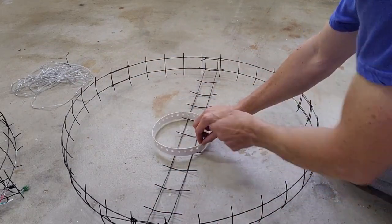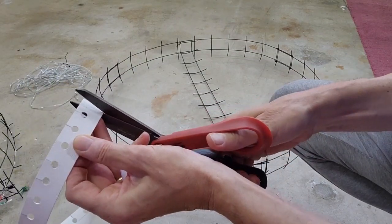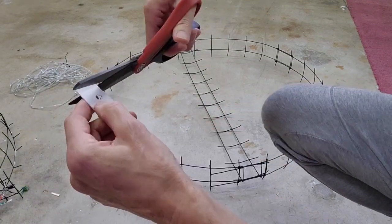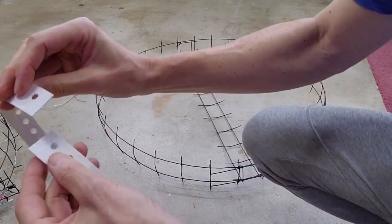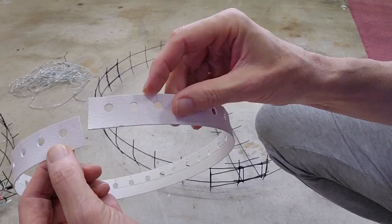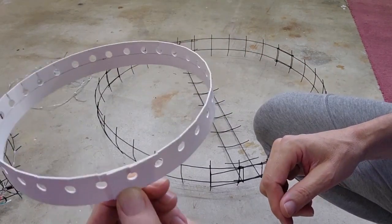On the last hole I just trim off a little bit of this strap so it doesn't block the holes. Now I'm going to take a zip tie and overlap the last hole, just wrap it and zip tie it so we've got a ring for the center.